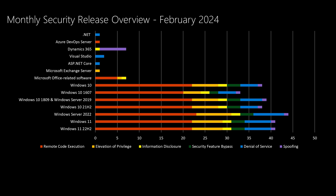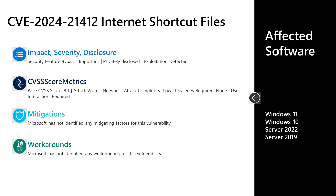Moving up the chart, we get into Office and then some products we don't see every single month. With Office we have seven vulnerabilities. There's a vulnerability with Exchange that we'll talk to in just a few minutes. Developer tools such as ASP.NET, Visual Studio, Azure DevOps, and .NET all have vulnerabilities being addressed this month. Dynamics 365 also has a handful of vulnerabilities being addressed this month.